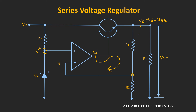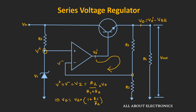If the output voltage tries to reduce, the output of the op-amp will increase, maintaining the fixed output voltage. Due to this closed-loop configuration, V+ equals V-. The voltage V+ equals Vz. And V- can be represented as R2 divided by (R1 plus R2) times V0. From this, V0 equals Vz times (1 plus R1 divided by R2). By selecting the values of Vz, R1, and R2, we can decide the regulated output voltage.